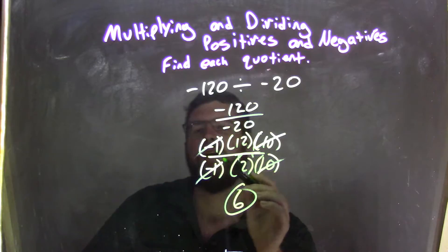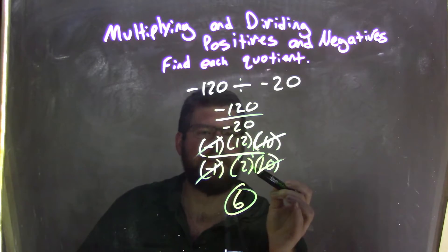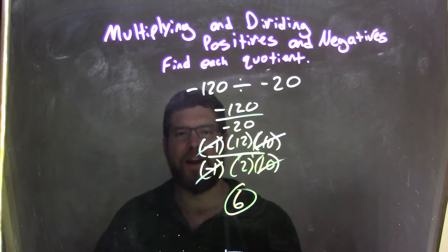The 10s cancel, the negative 1s cancel, and now we're left with 12 divided by 2. And 12 divided by 2 is just 6, our final answer.